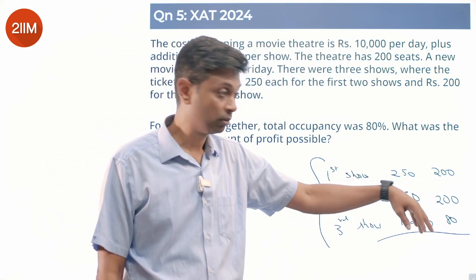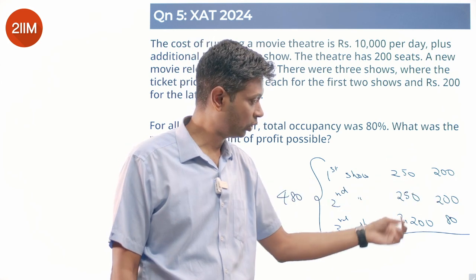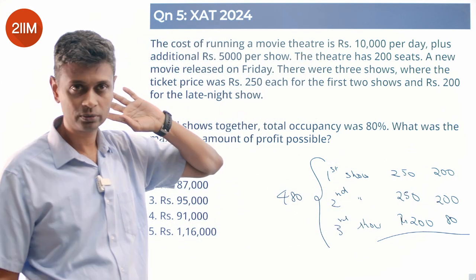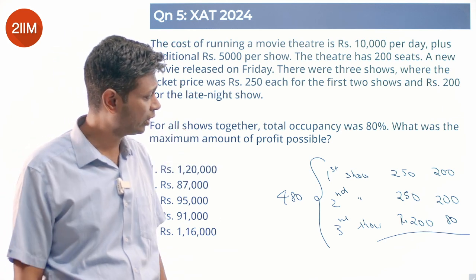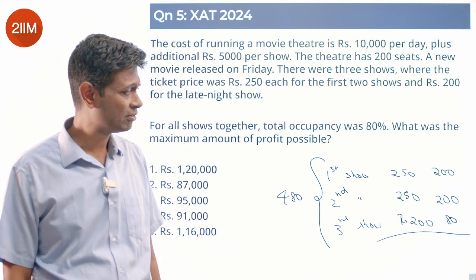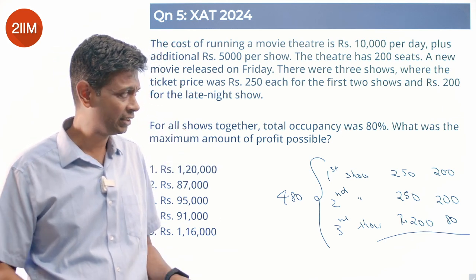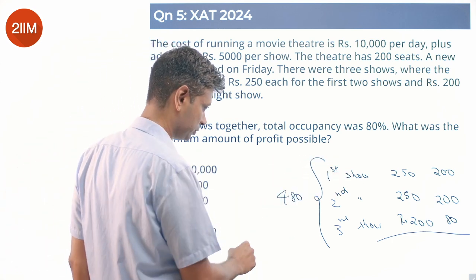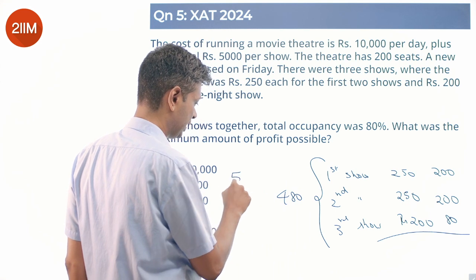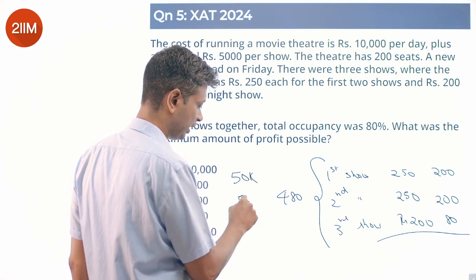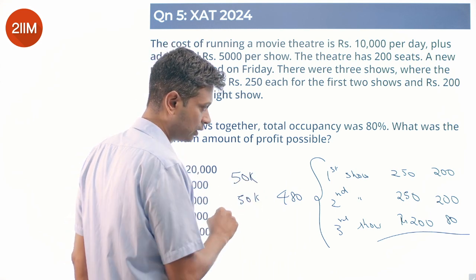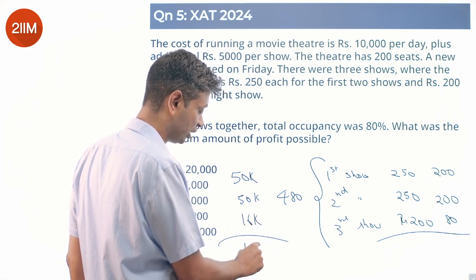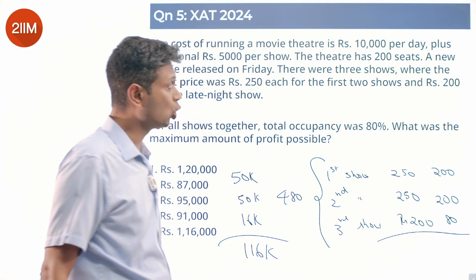Revenue: 250 into 200, plus 250 into 200, plus 200 into 80. That gives 50,000 plus 50,000 plus 16,000. Total revenue is 1,16,000 rupees.